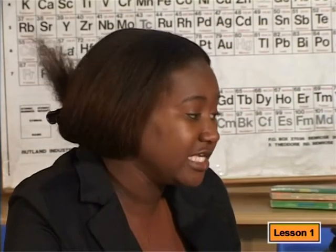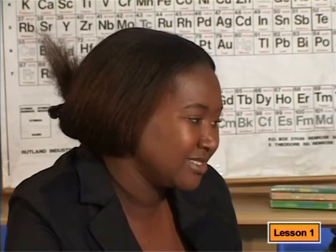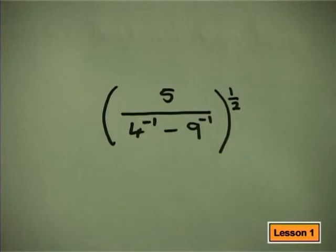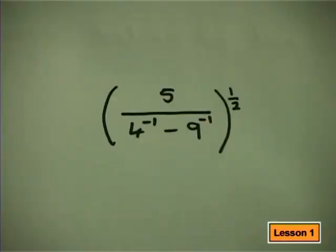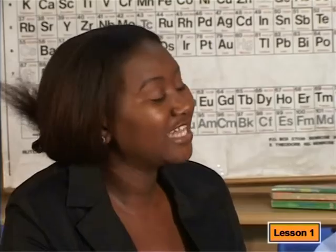We can move on to using these laws to simplify expressions. We can start with this example. Tebahar, what do you think our first step should be? I think we should start by simplifying whatever we can that's inside the bracket. That's a good place to start. And how are you going to do that?